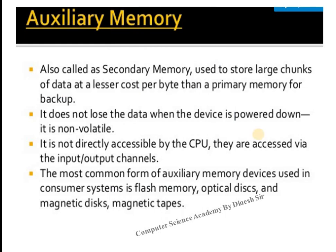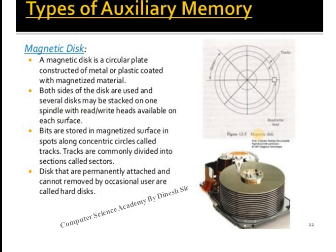Auxiliary memory is also known as secondary memory. With auxiliary memory we can store data permanently — meaning data is not lost when there is a power failure. That is the key characteristic of auxiliary memory: it stores data permanently.